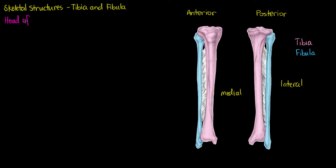Now let's have a look at the structures that both of these bones have on them. The first structure we're going to see is the head of our fibula. The head of the fibula can be seen from the anterior and posterior views, and it is what's going to interact with our tibia.